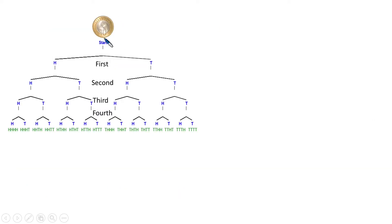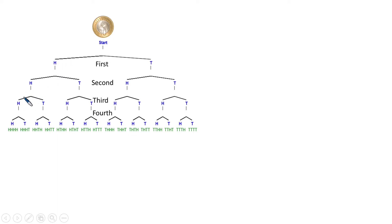Coming back to the coin example: I start a toss and get head or tail. Continuing — second toss, third toss, fourth toss. The more tosses you do, you can get head, head, head — three heads — or head, head, tail. If you have four tosses, you can get four heads, or three heads and one tail, and so on. All these combinations exist.